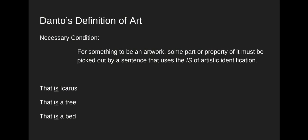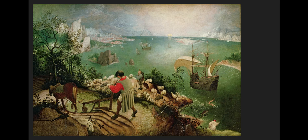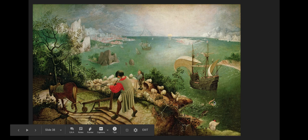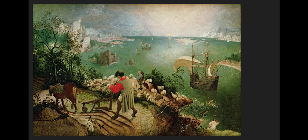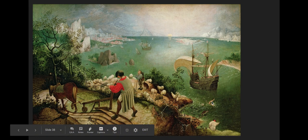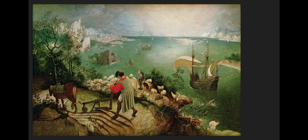What's cool is that Danto thinks he can use this 'is of artistic identification' to give a definition of art. Here's his definition: it's a necessary condition on being an artwork that some part or property of that artwork must be picked out by a sentence that uses the 'is of artistic identification.' For example, back in this painting, we can say this painting is an artwork because there's some part of it — namely this dab of paint — that we can use in a sentence with the 'is of artistic identification.' I can say this dab of paint is Icarus, or this white collection of paint over here — that is a sheep. Those are all uses of the 'is of artistic identification.'